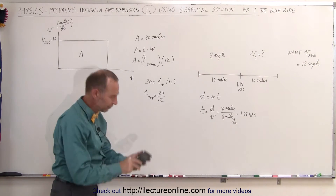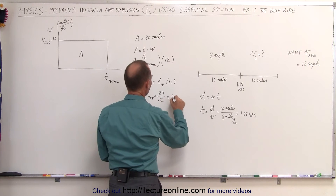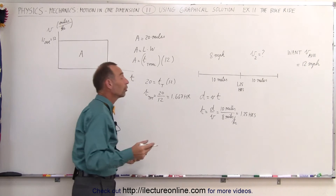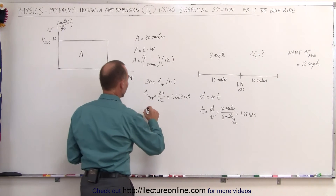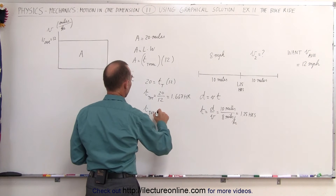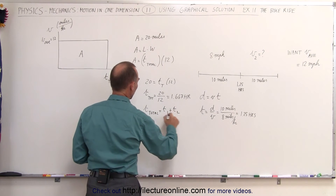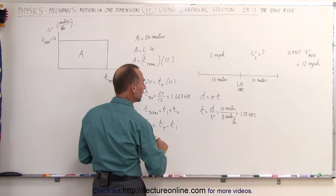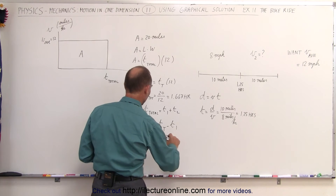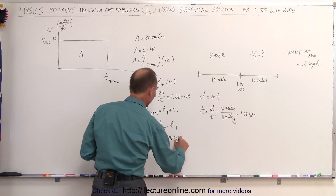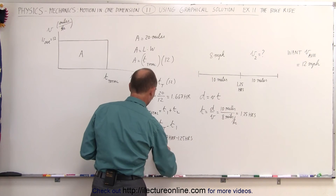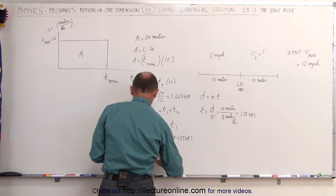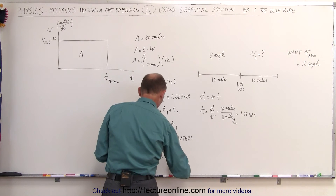20 divided by 12 gives us 1.667 hours, or 1 and 2/3 hours. We know that T total equals T1 plus T2, which means T2 equals T total minus T1 — that is 1.67 hours minus 1.25 hours — so T2 equals 0.417 hours.